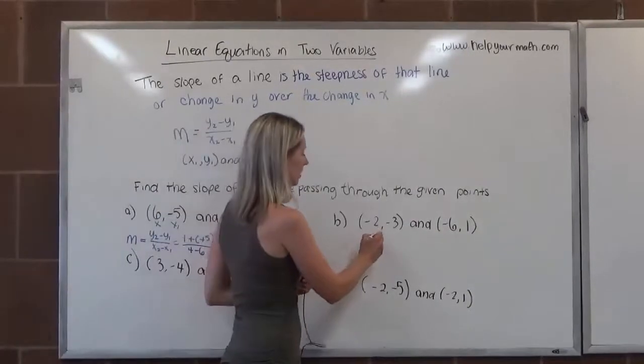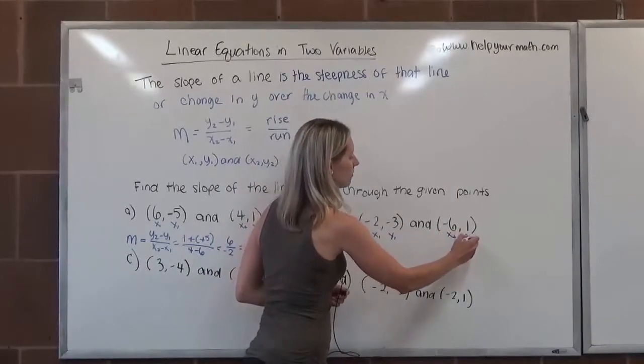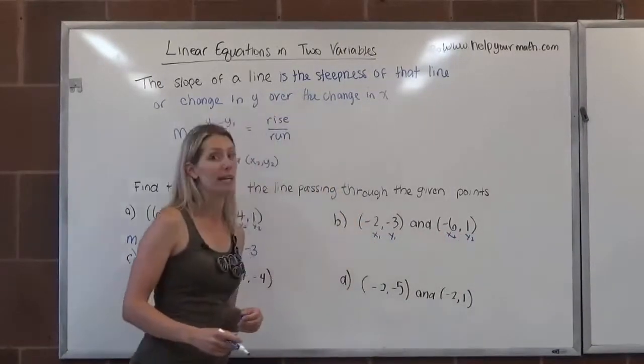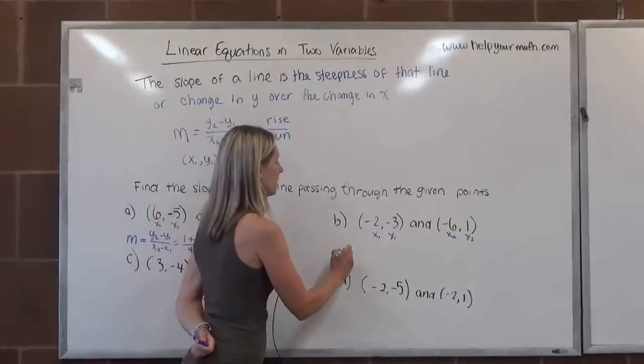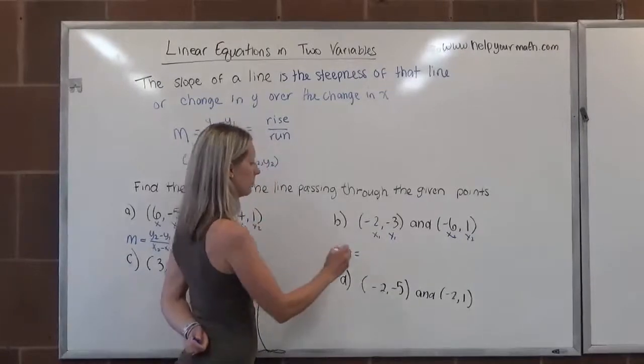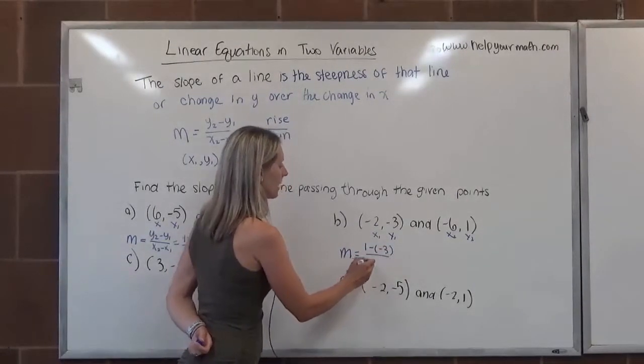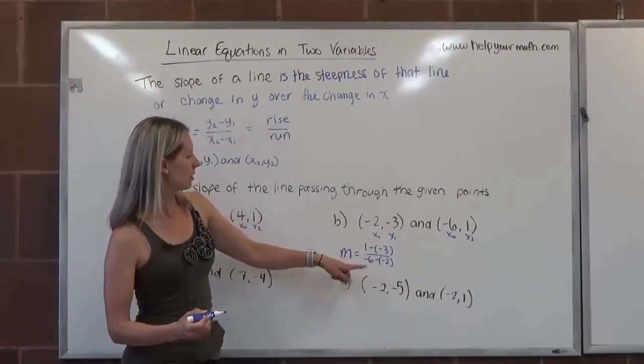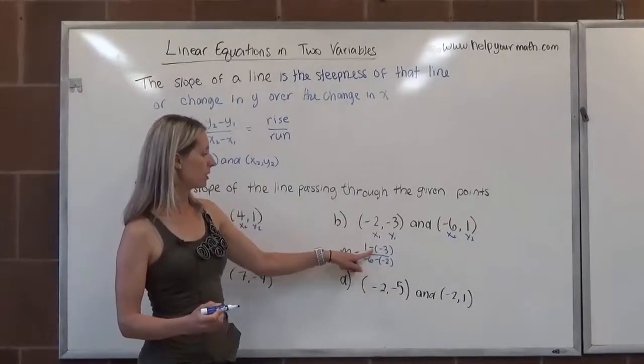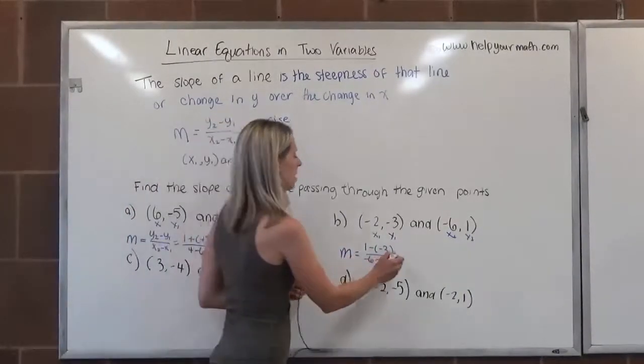Okay, letter B. Here's my x1, y1. Here's my x2, y2. Again, if you don't know the slope formula, write it down. y2 minus y1 over x2 minus x1. Let's write our slope. That would be 1 minus negative 3 over negative 6 minus negative 2. Again, we want to make sure that we have not only the subtraction, but if the coordinate's negative, include that negative as well.